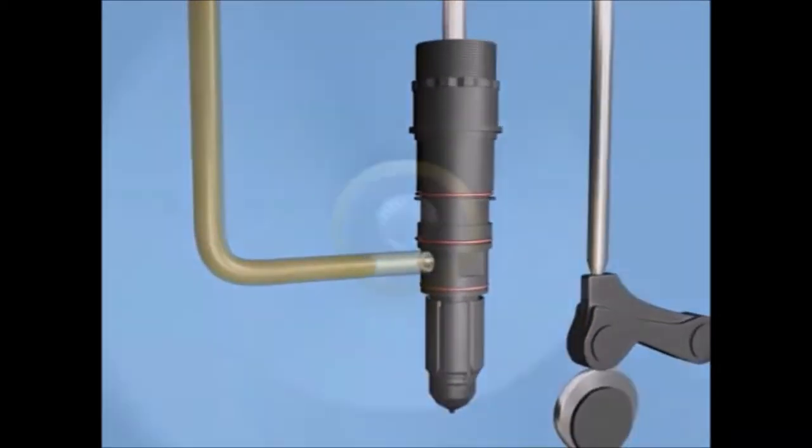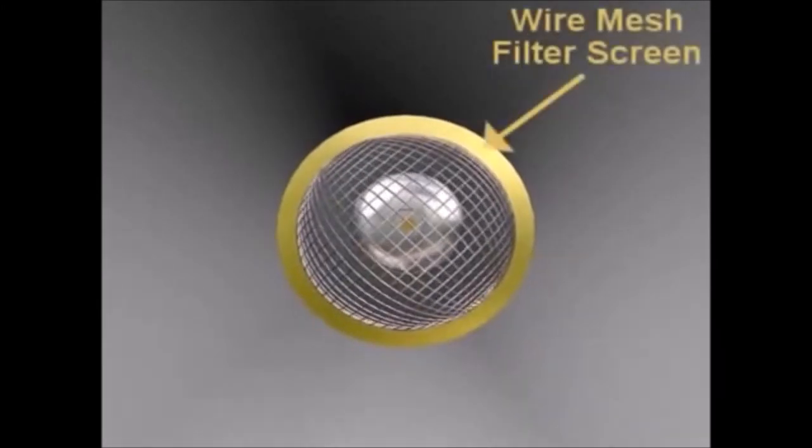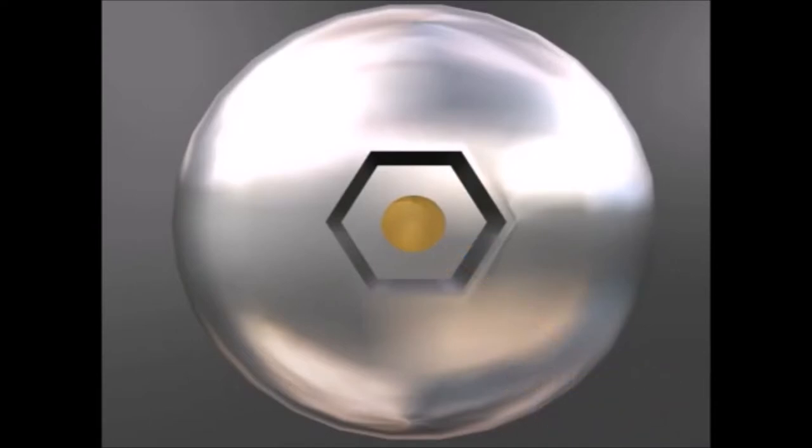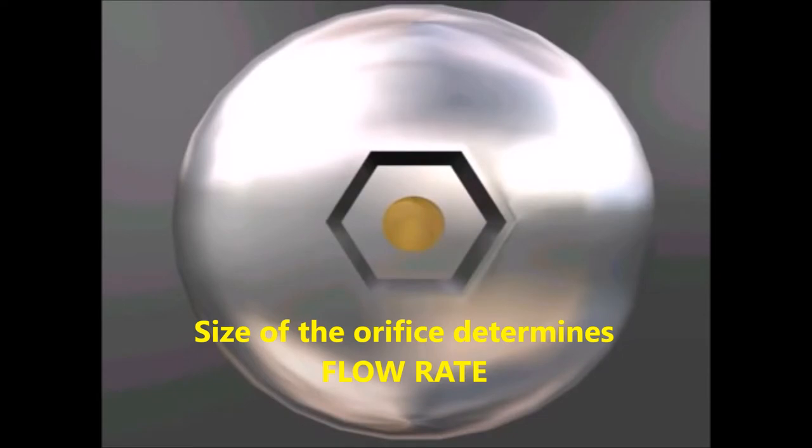Fuel entering the injector flows through a wire mesh filter screen and an adjustable orifice located beneath the filter screen. The size of the adjustable orifice determines the flow rate through the injector and therefore the pressure at the metering orifice.